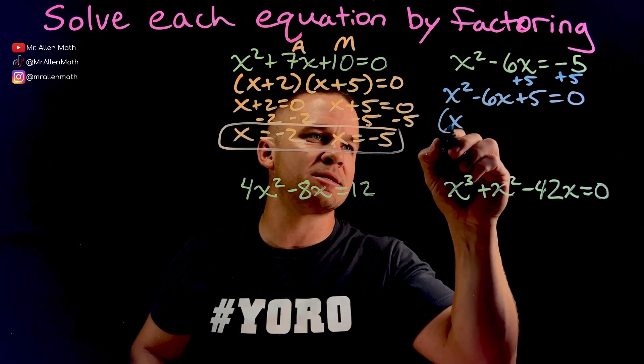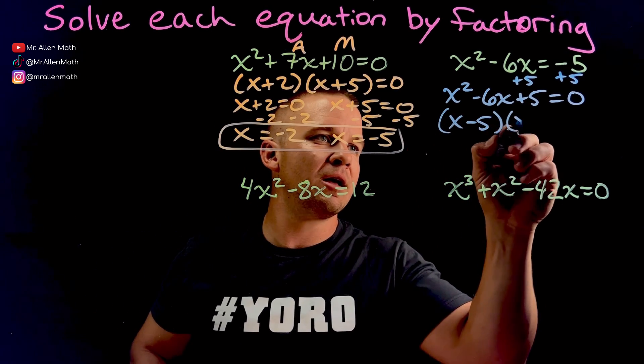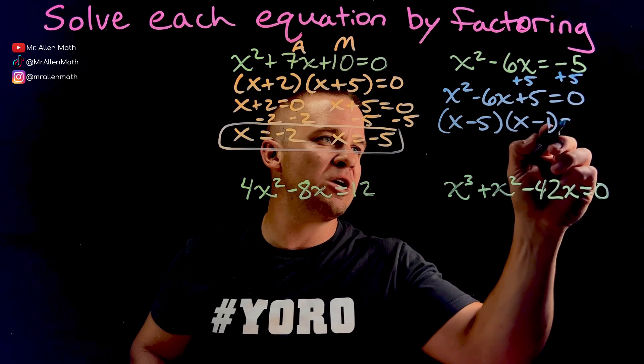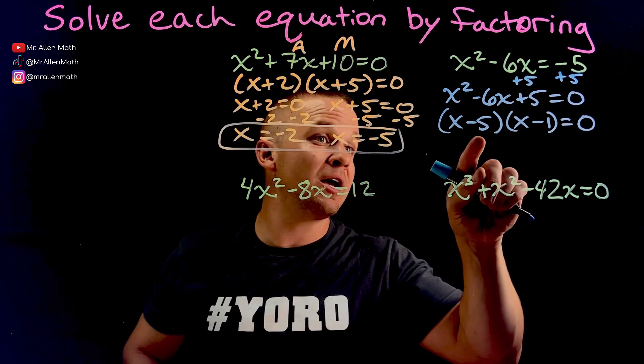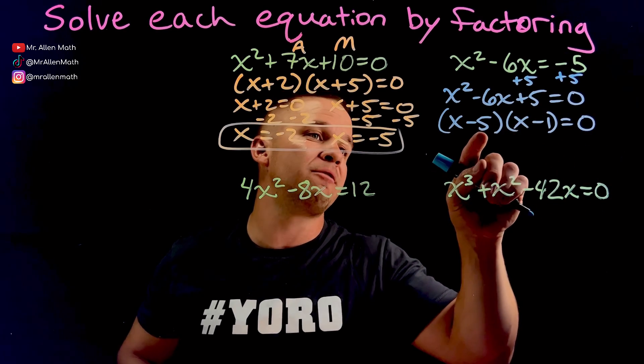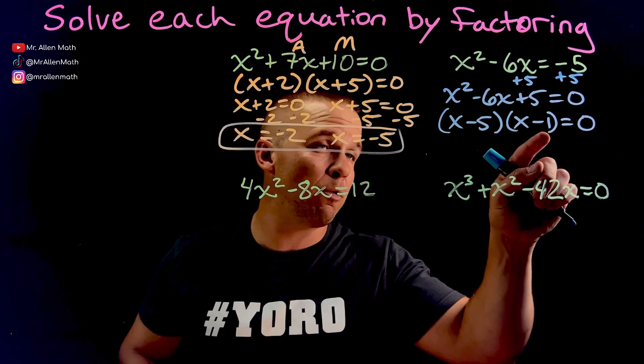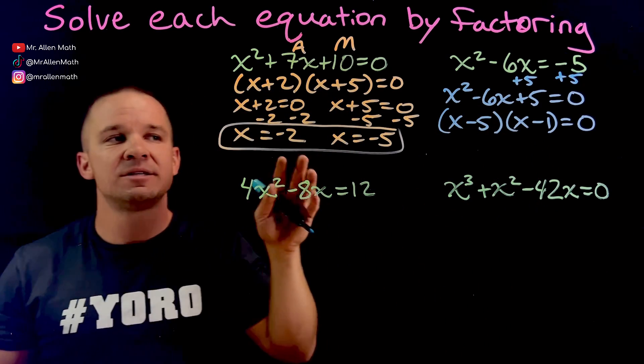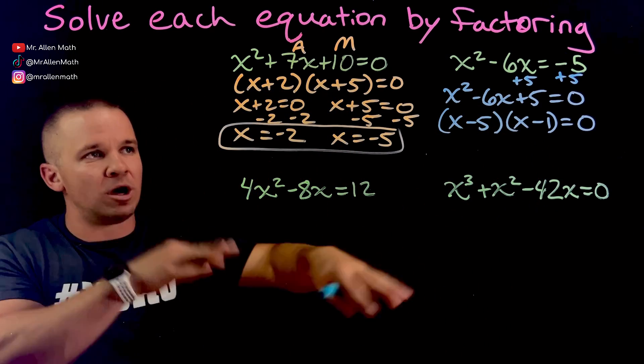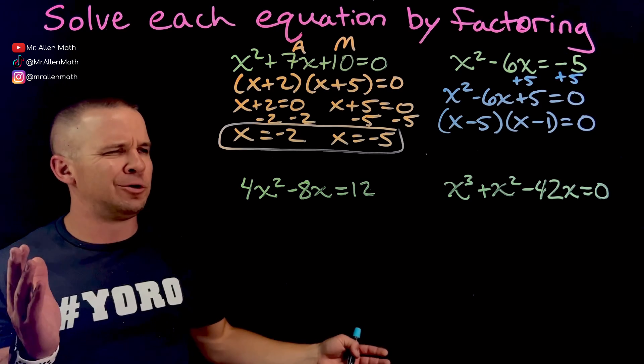We got it. So I got X minus 5, X minus 1 equals 0. Negative 5 times negative 1 is positive 5. Negative 5 plus negative 1 is negative 6. That's factored. If you multiplied it back out, you'd get back to that stuff above. Cool.